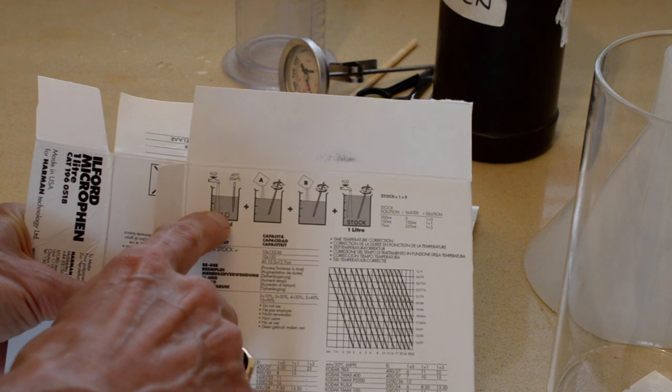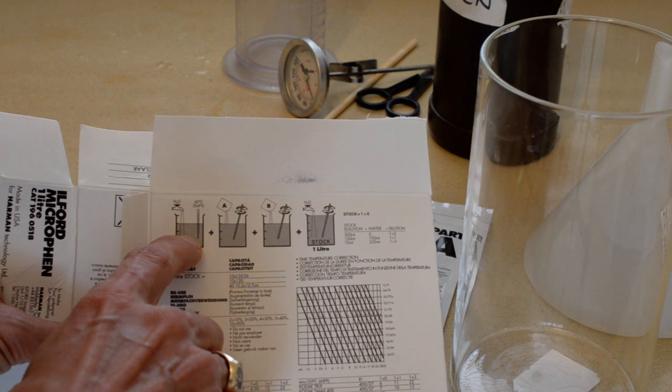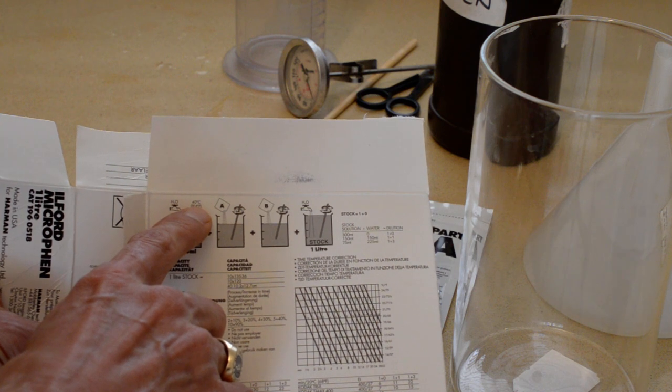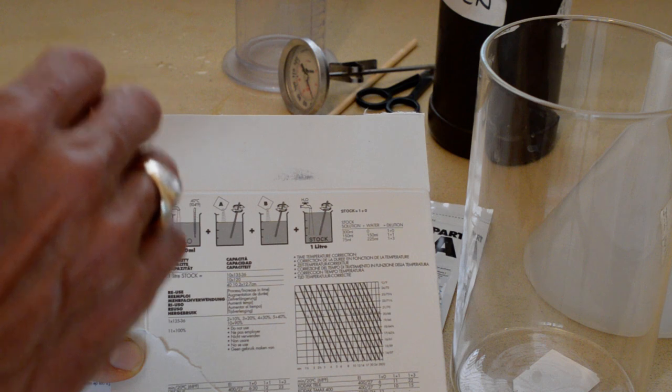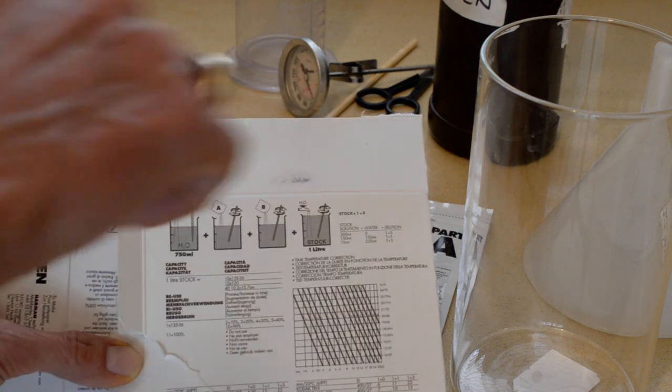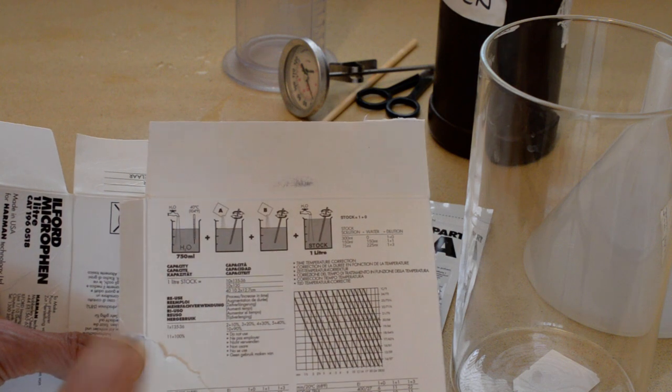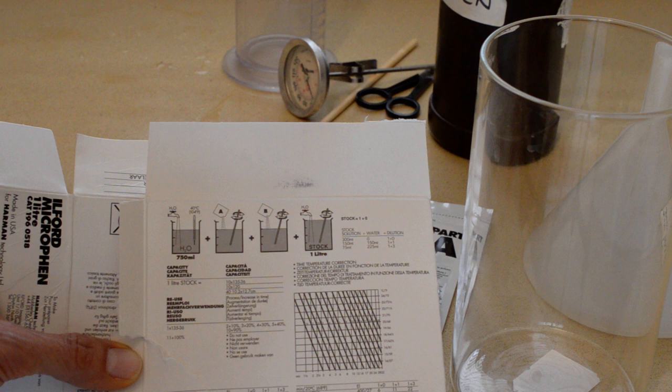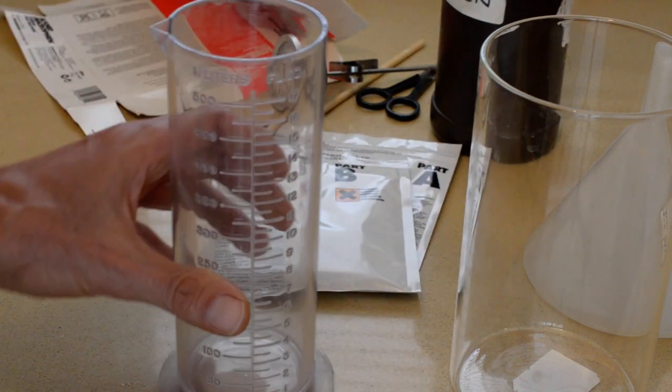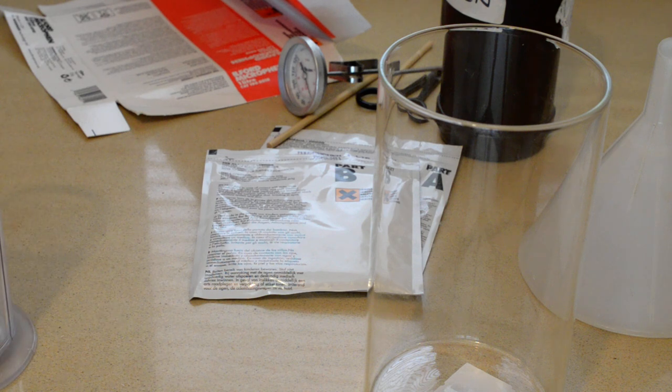So first step, we need to fill our beaker with 750 milliliters of water at a temperature of 40 degrees Celsius or higher. 40 degrees is the minimum and obviously that's to dissolve the powder. The water coming out of my tap is hot enough, at least today it is. If it's not hot enough, then you might want to boil some water and mix it in. I wouldn't put boiled water straight in, that's probably overdoing it, but you might want to mix some boiling water with some regular tap water.